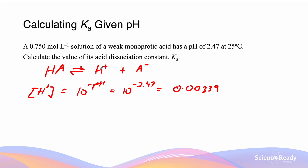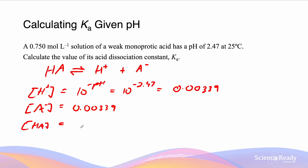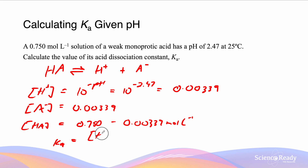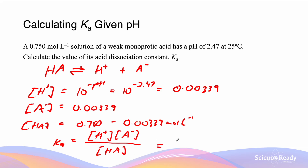Since H⁺ and A⁻ are in a 1:1 ratio, [A⁻] is also 0.00339 mol/L. The initial concentration of HA is 0.750 mol/L, but we lose 0.00339 mol/L through dissociation. Using these values in the Ka expression — products over reactants — we get Ka = 1.54 × 10⁻⁵.